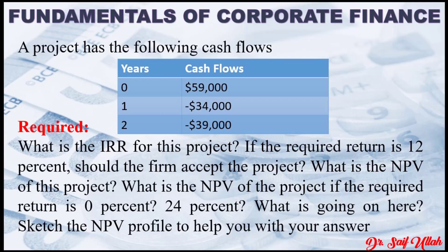A project has the following cash flows: cash inflow at zero time period of 59,000, then 34,000 and 39,000 respectively for the next two years. What is the IRR for this project? If the required return is 12%, should the firm accept the project? What is the NPV of this project? What is the NPV if the required return is 0% or 24%?